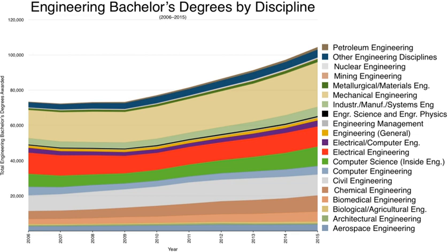In the fifth year of HTL, as in other secondary schools in Austria, there is a final exam called Matura. Graduates obtain an engineering degree after three years of work in their studied field.